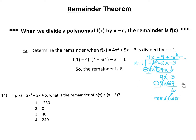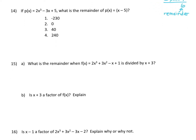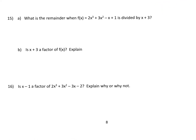Instead of going through the whole process of long division, you can just substitute in x equals positive 1, and you will wind up with the same remainder. Now let's take a look at a couple of examples. Let's start with number 15: what is the remainder when f(x) is divided by x plus 3?